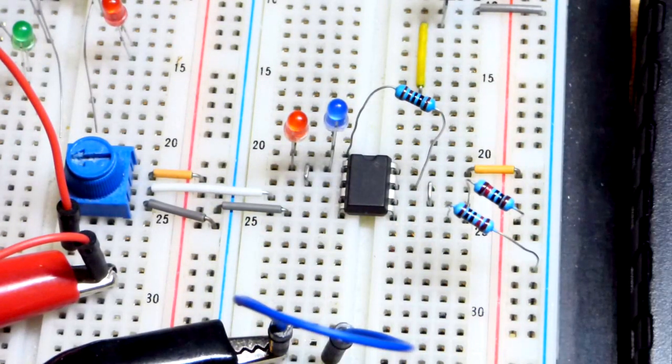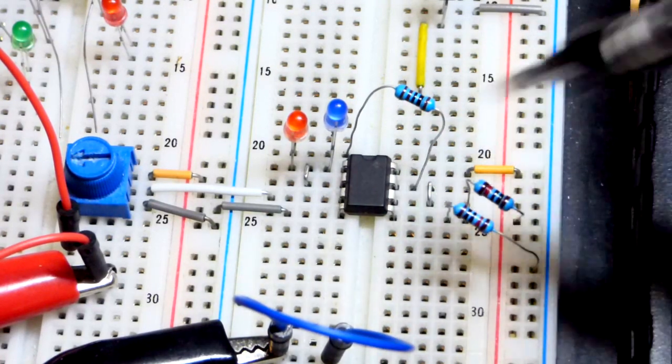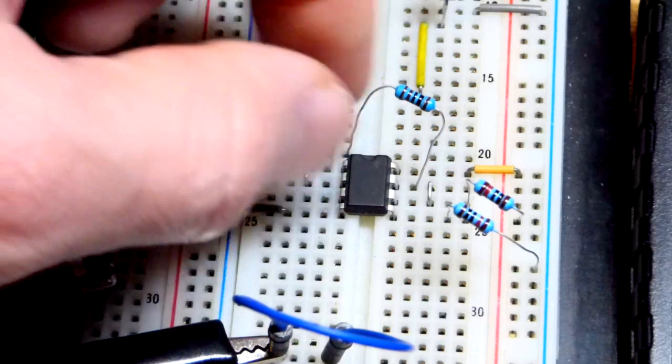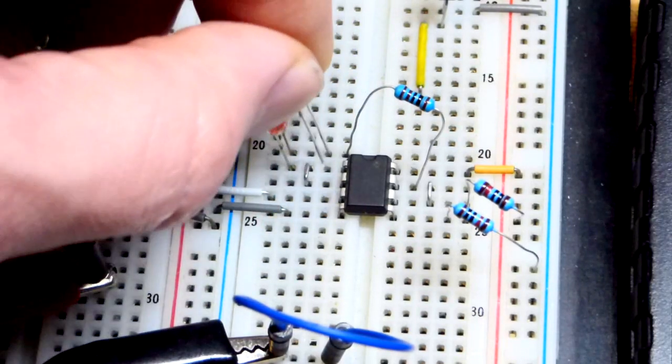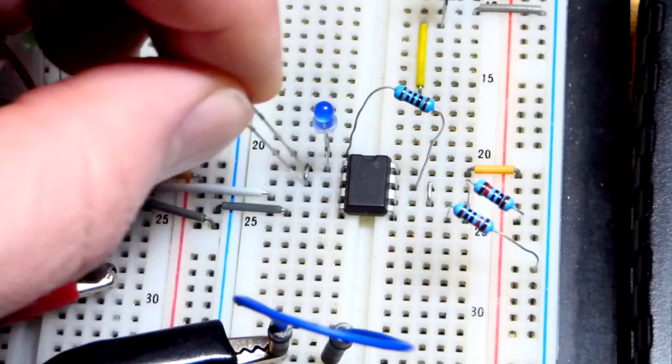In this case here you can see the resistor going to our virtual ground there. And we have our LEDs. Of course, the short lead, the cathode, needs to go to the output for the blue LED. Long lead up there to the resistor.